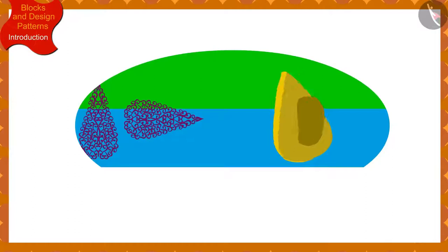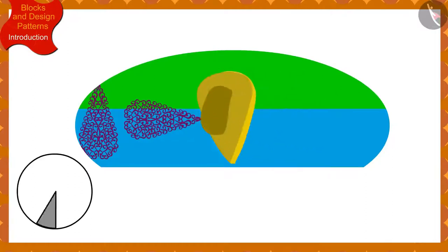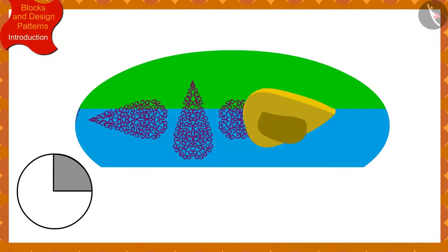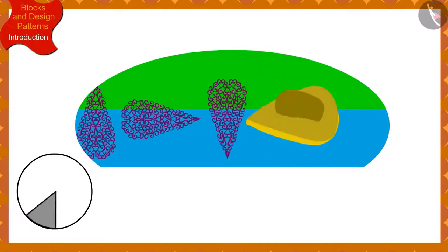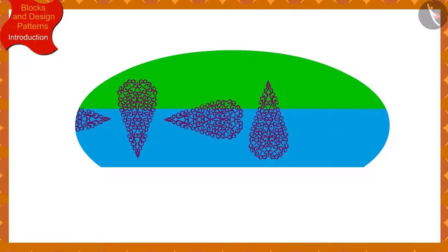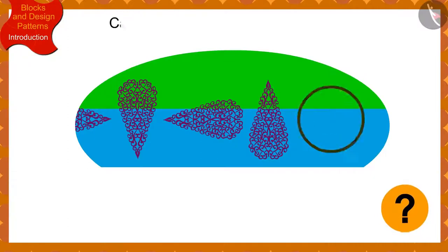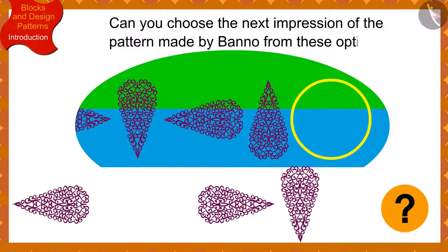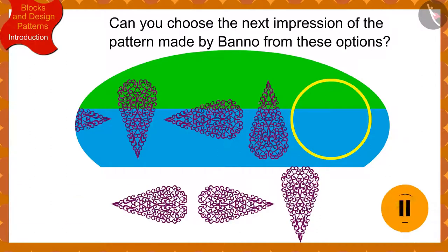Children, if Banno has made this design so far by rotating the block by a quarter in the clockwise direction every time, can you choose the next impression of the pattern made by Banno from these options? If you wish to, you may stop the video and think of the answer.